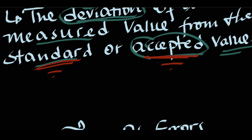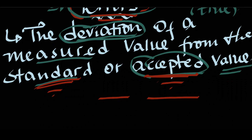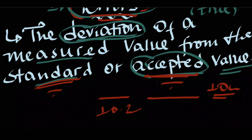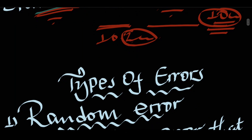In experimental terms, an error is not the same as a mistake. A mistake means a wrong value. For example, if you are supposed to use 100 centimeters and you use a different value, that is a mistake. The error is the deviation from the standard value - these are different concepts.